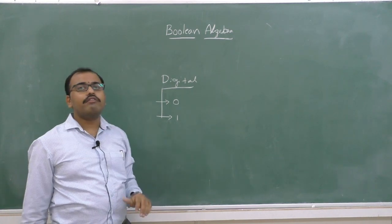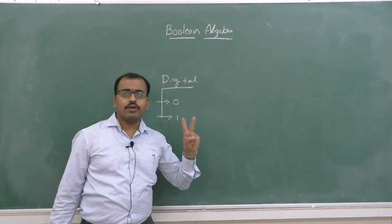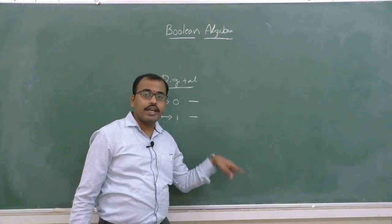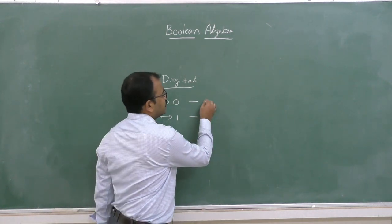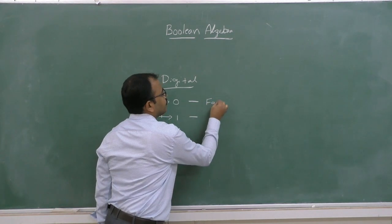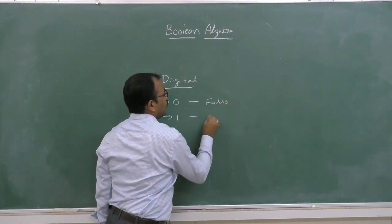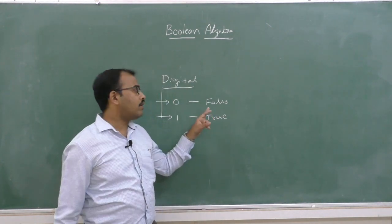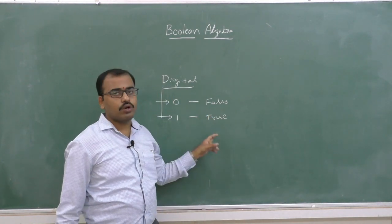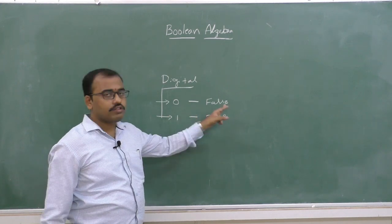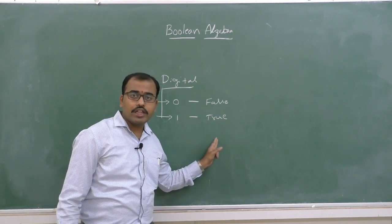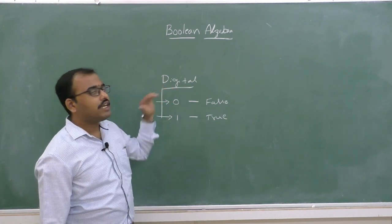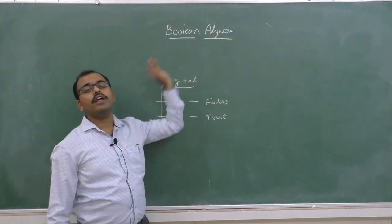In Boolean algebra, we will represent in two numbers — one is 0 and another one is 1. In mathematics, we will represent in terms of false and true. So 0 means false and 1 means true. When we represent in this manner, it is called as digital system or Boolean algebra.